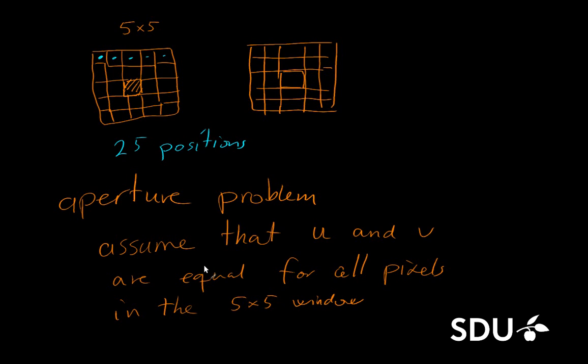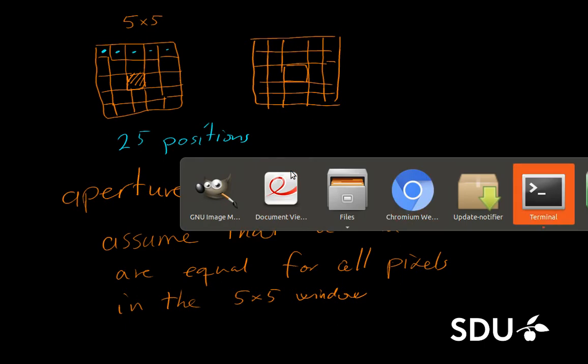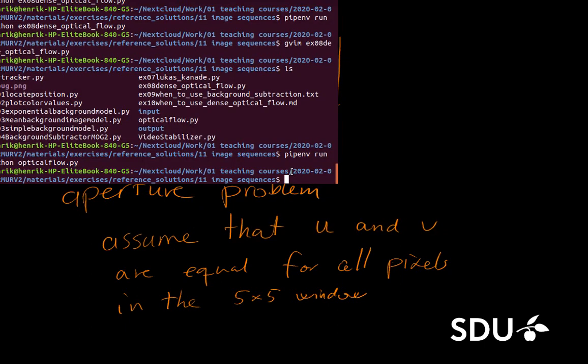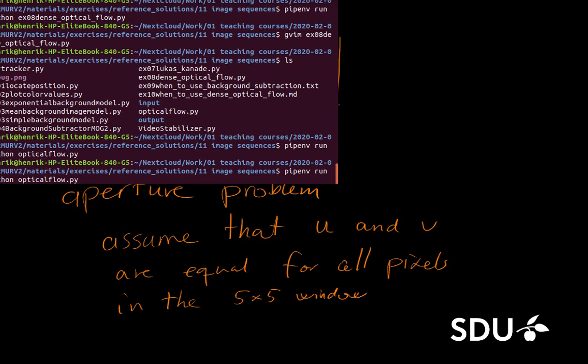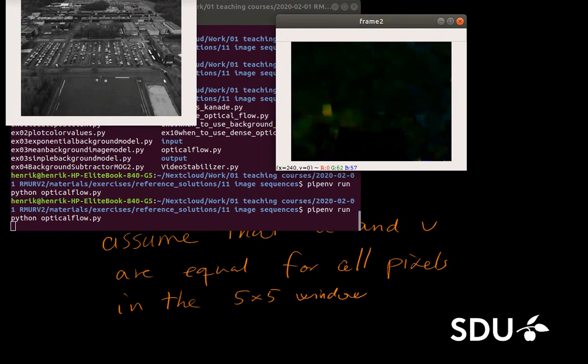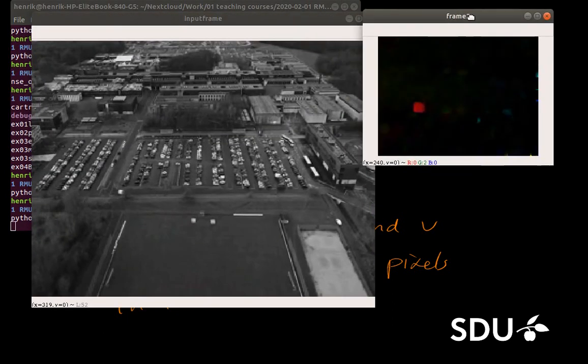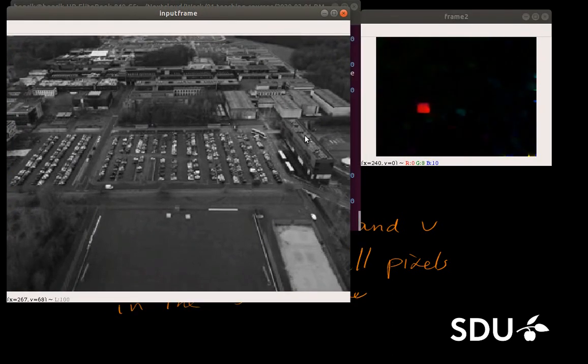So we assume that the displacement in X and Y, the U and V values, are equal for all pixels in this 5x5 window. And when that's in place, we are actually able to solve this optical flow problem in a quite decent way. I have a small demonstration of this that I would like to run here.